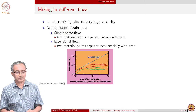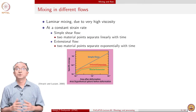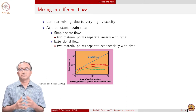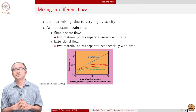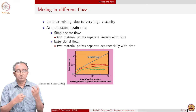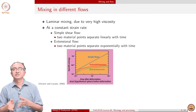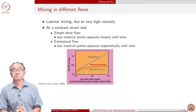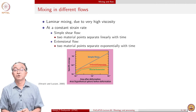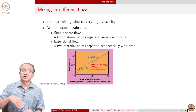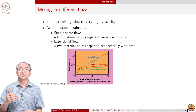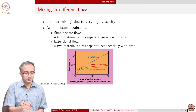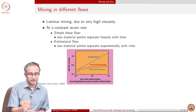Let us first look at mixing in different flows. Polymeric materials are largely mixed in laminar flow conditions. When mixing low viscosity fluids we achieve turbulence with eddies forming and breaking, achieving mixing easily. But in case of polymers, because we have laminar flow, mixing always depends on the type of flow — either shear flow or extensional flow.